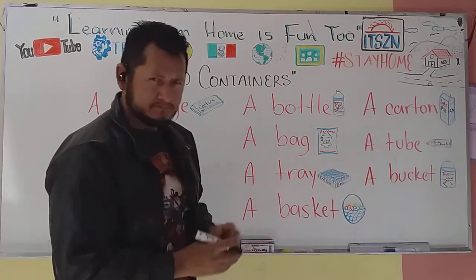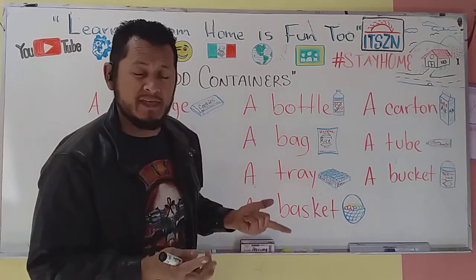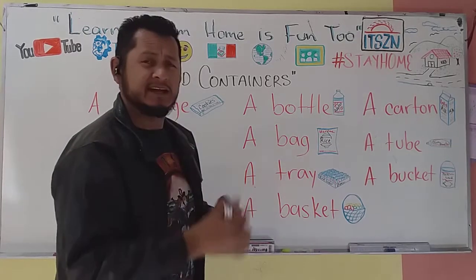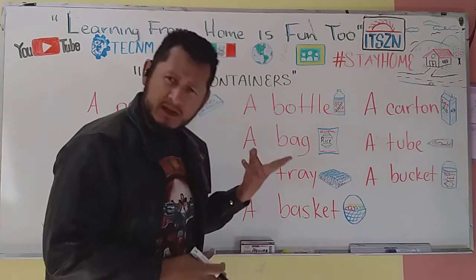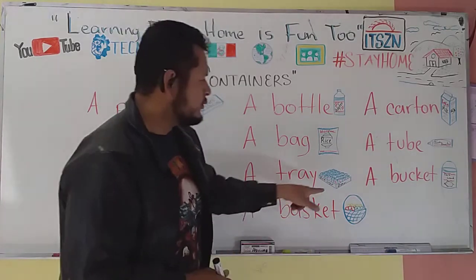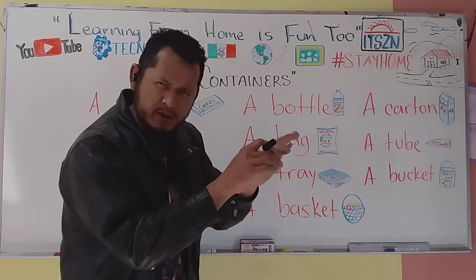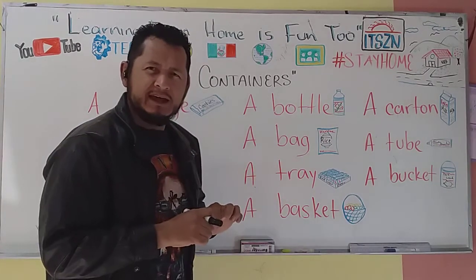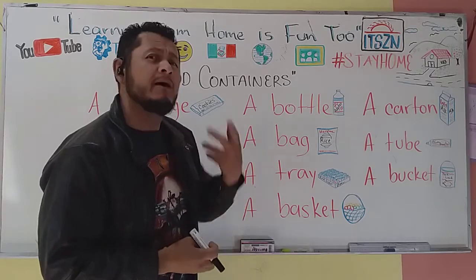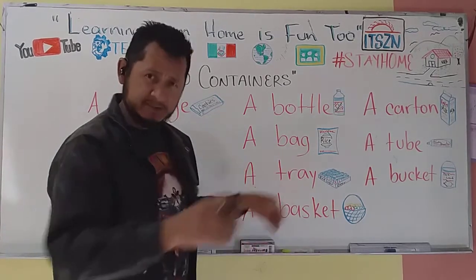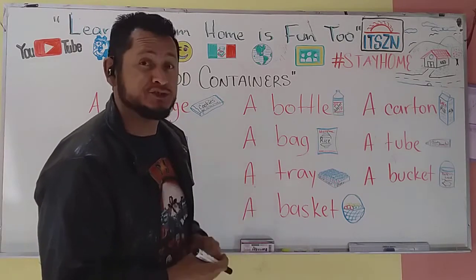A tray es una charola. Por lo regular es rectangular o cuadrada, a veces inclusive ovalada. Por lo regular, si usted compra un tray es más que nada mayoreo — viene un poco más producto de lo que a veces necesitamos para aprovechar el recipiente. Se dice a tray.